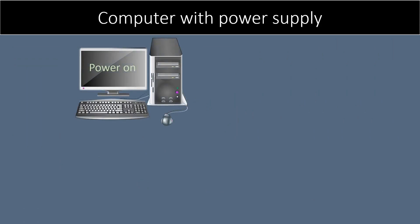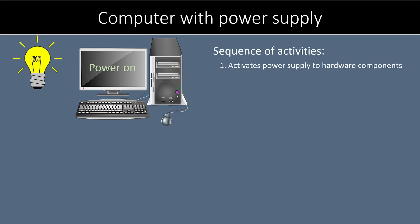Now let us say that the computer's power is turned on. What is the sequence of activities that happens once the power is turned on? First of all, the power button activates power supply to all the hardware components of a computer.